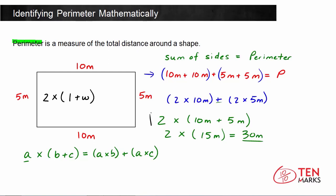When you have a rectangle, the perimeter is found by taking 2 times the length plus the width. We have 2 times the width plus the length, the width being 10 meters, the length being 5 meters. So for a rectangle, this is your formula for perimeter.